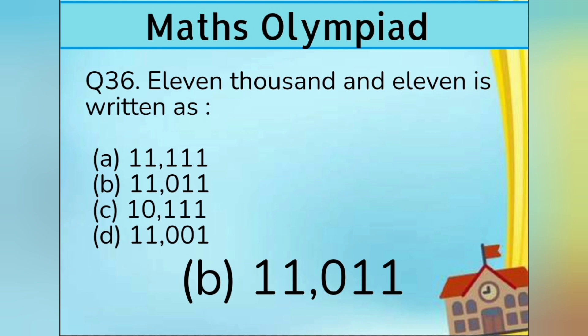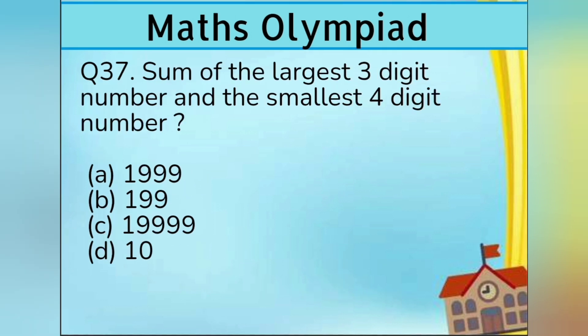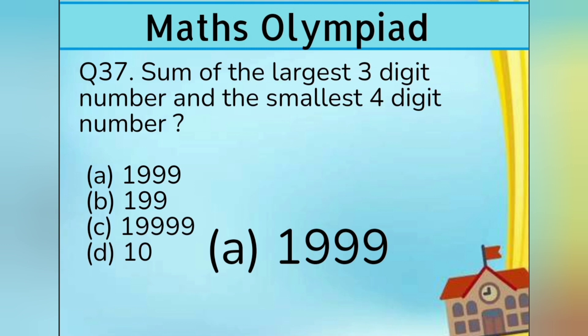Question 37. Sum of the largest 3-digit number and the smallest 4-digit number: Option A 1,999, Option B 199, Option C 19,999, Option D 10. Answer is Option A 1,999.